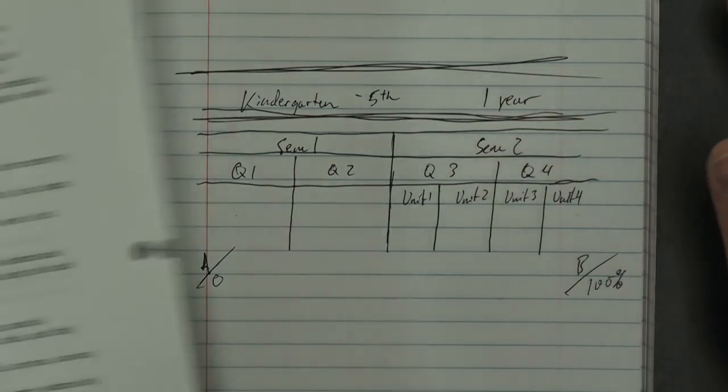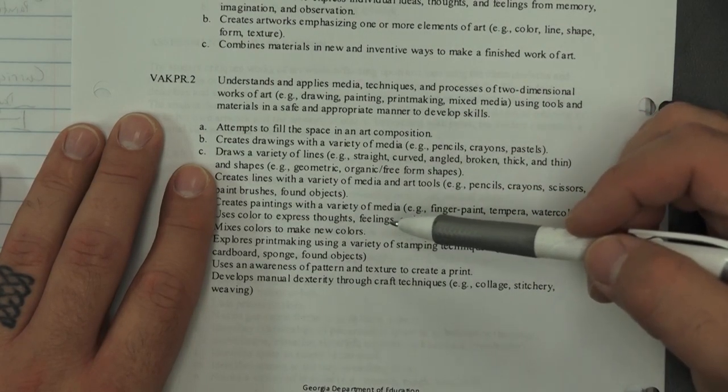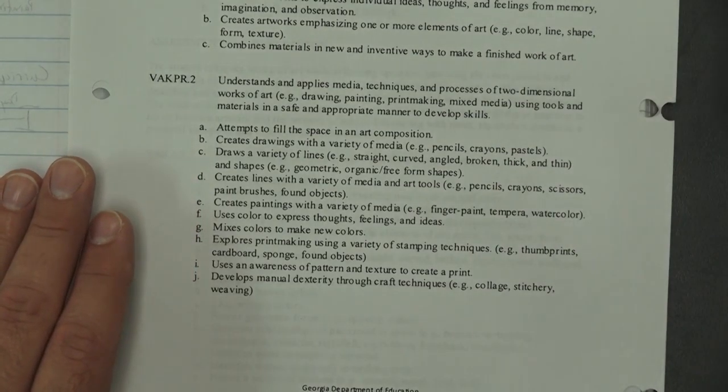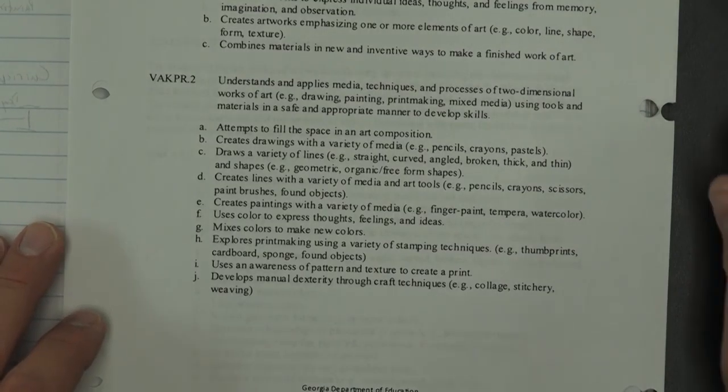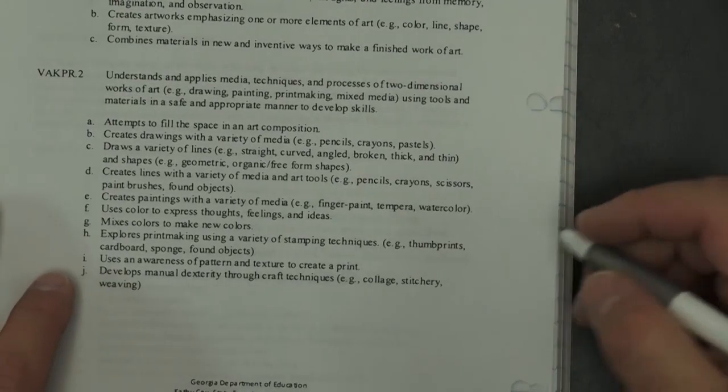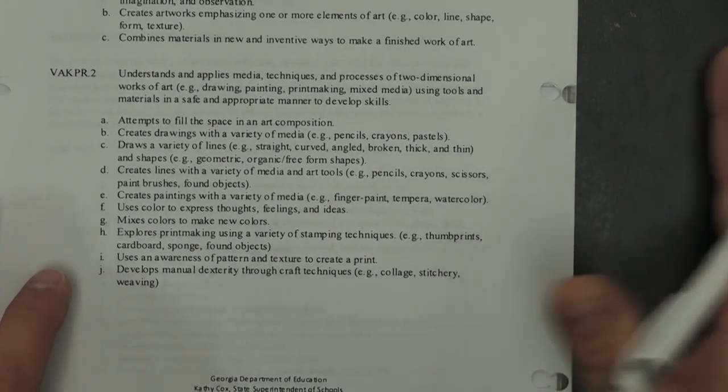We'll make it as free and open as possible. Kindergarteners, for the most part, they need to know that we don't color off the paper onto the table. Not saying you can't go to the edge of the paper, just don't color the table.